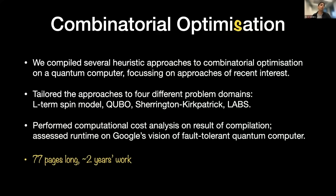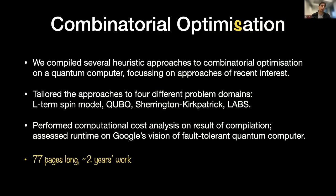We performed a computational cost analysis on the compilations. We took these heuristic approaches, figured out what the quantum computer would be doing at a low level — meaning what circuits it would execute — and figured out roughly how big those circuits are. We then translated that into a numerical assessment of how long a Google fault-tolerant quantum computer would run, since this was in collaboration with Google. This analysis took us something like two years of work, and we're a pretty expert team. The result is 77 pages long, which is very much par for the course in quantum algorithms research.